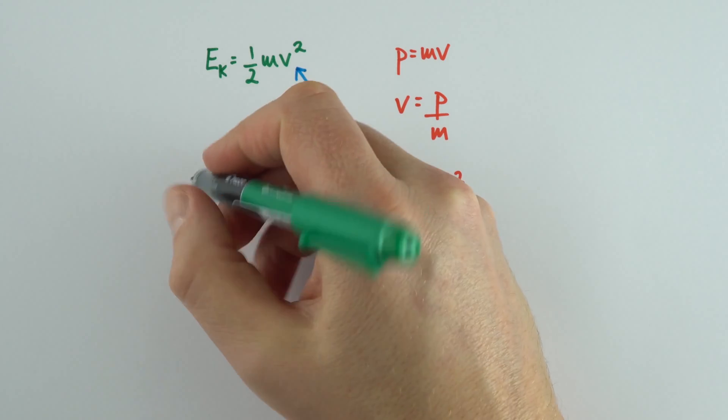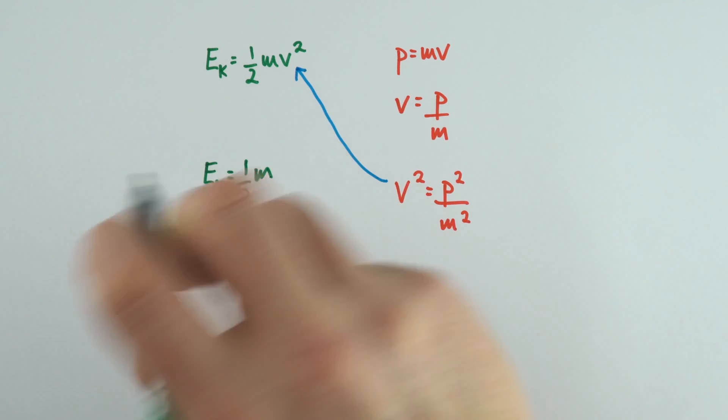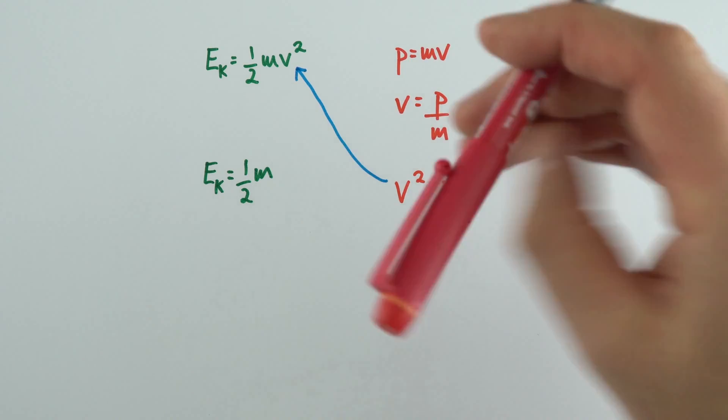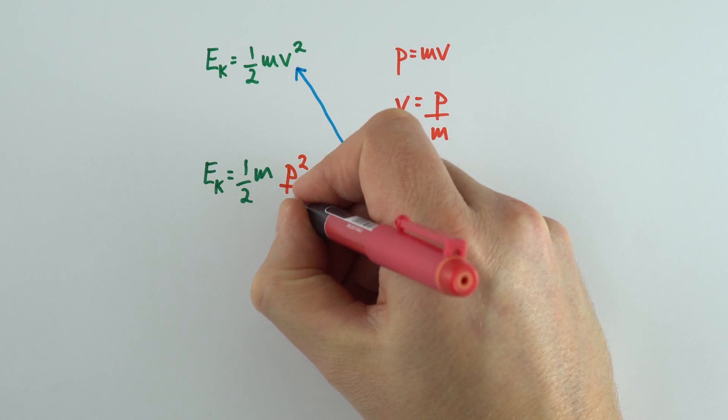So if I write that out, we can then say that the kinetic energy is equal to 1/2 times the mass, and then v² is equal to p² divided by m².